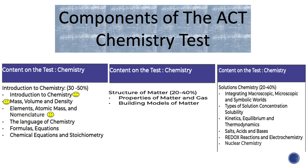Referring back to the ACT chemistry test, we will have covered the objectives with the smile emoji next to them after finishing the first unit. We will have done introduction to chemistry, mass, volume, and density, elements, atomic mass, and nomenclature, which is part of the chemistry component on the test worth 30 to 50% of the overall grade.